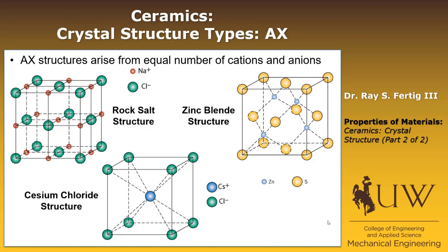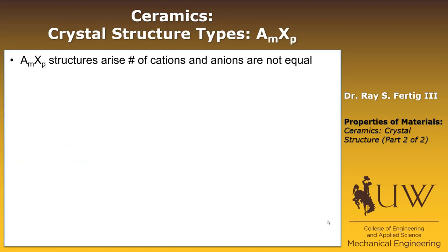So those are the three main AX type structures that will arise. I'll just say up front that there are more structures out there that we just can't talk about. The next class are the AmXp structures. Remember that A, even though it's a little counterintuitive, refers to the ions — so we have M number of cations per P number of anions. In this case, the number of cations and anions are not equal.